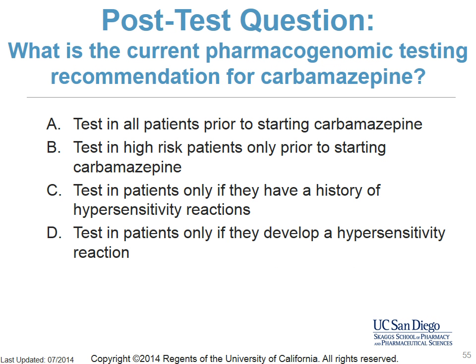Post-test question: What is the current pharmacogenomic testing recommendation for carbamazepine? Options are: A, test all patients prior to starting carbamazepine; B, test high-risk patients only prior to starting carbamazepine; C, test patients only if they have a history of hypersensitivity reactions; or D, test patients only if they develop a hypersensitivity reaction. The answer is B, test in high-risk patients only prior to starting carbamazepine.